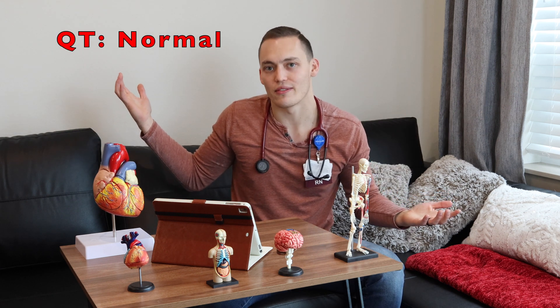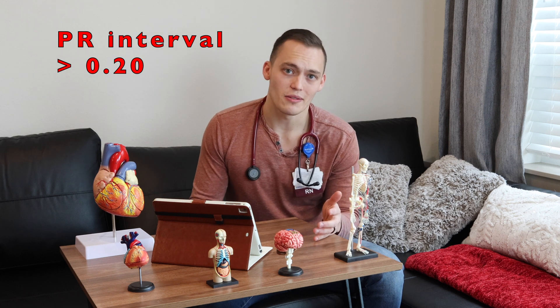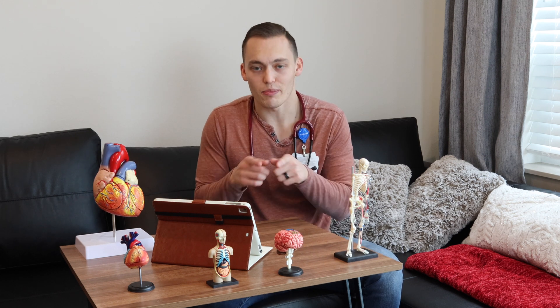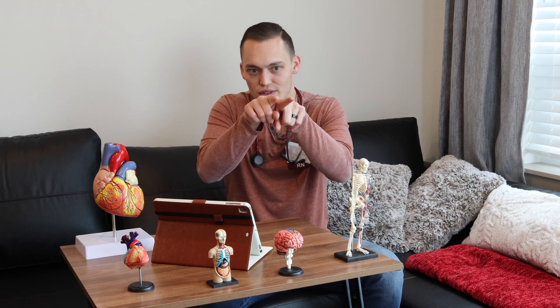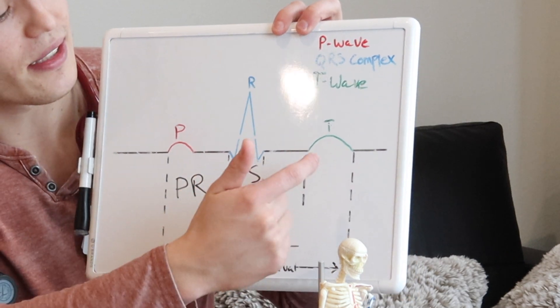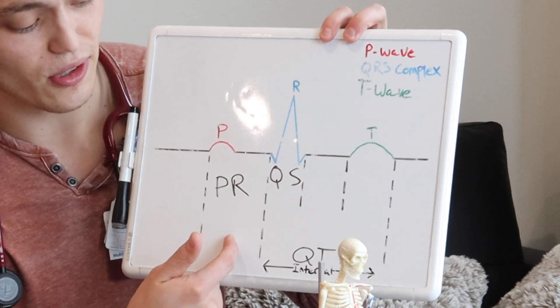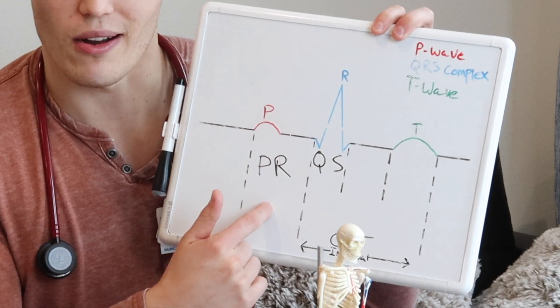So what is actually wrong in first-degree heart block? The PR interval is where you'll find the abnormality on an ECG strip. In a first-degree heart block, the PR interval is much longer than 0.20 seconds. To measure this you'd use calipers — those little pointy things — measuring from the beginning of the P wave to the beginning of the QRS complex. That is the PR interval.